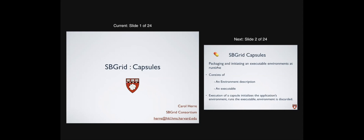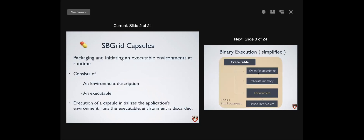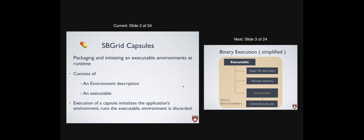An SBGrid capsule is basically packaging the executable and the environment together. The environment is only instantiated when you actually run the executable. There are two pieces: the environment description and the actual executable that we built. The execution of the capsule initializes the application's environment, then runs the actual executable, and then discards the environment.